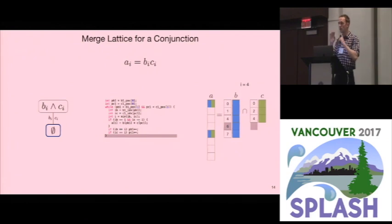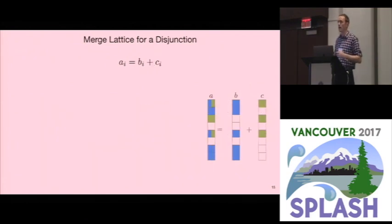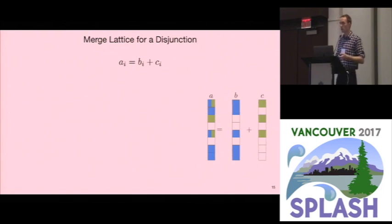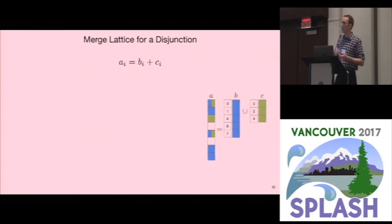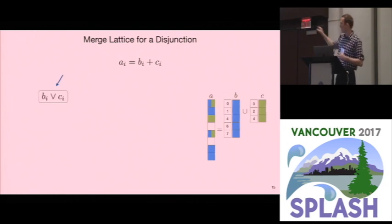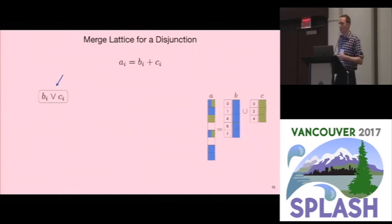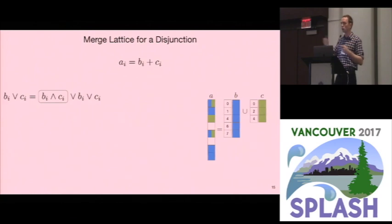That's the intersection case. Now let's look at the addition case, where you want to compute the union. For two sparse vectors, you iterate over the union. We can think of it as a lattice point that iterates while either B or C has a value left. But this turns out to generate very expensive code, so we rewrite it as a disjunction of conjunctions and put that into a lattice structure that our compiler uses to emit code.